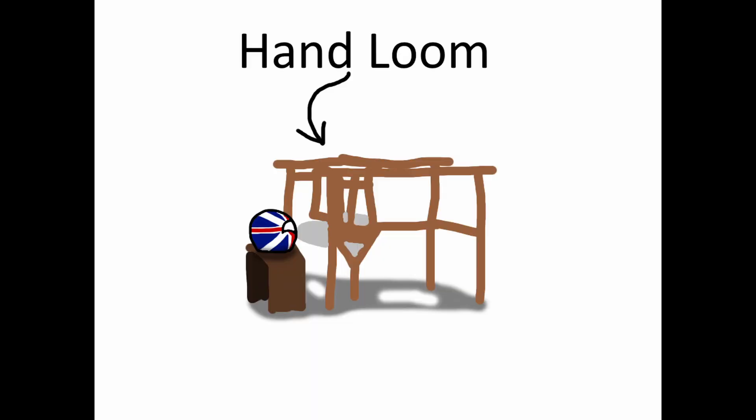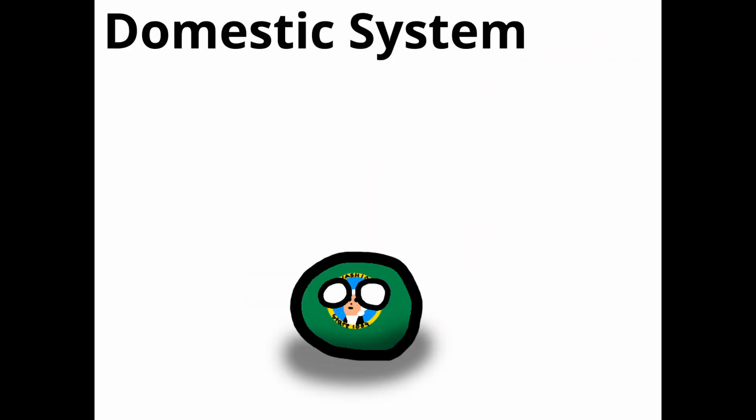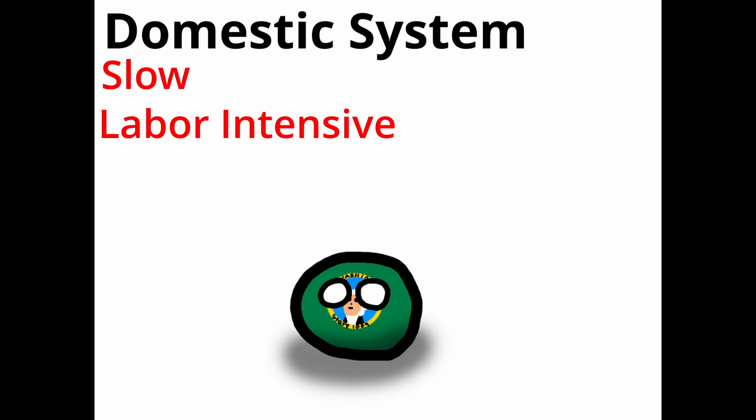Before the Industrial Revolution, most manufacturing was done by hand in small workshops and households. This system, known as the domestic system or putting-out system, was slow, labor-intensive, and could only produce small quantities of goods.